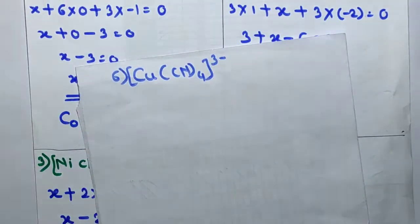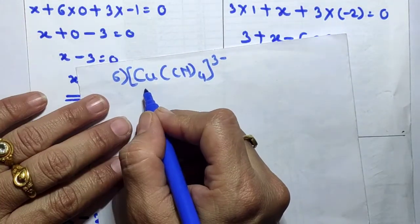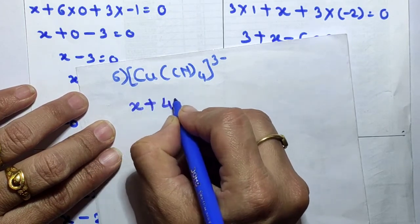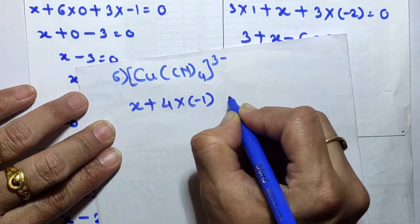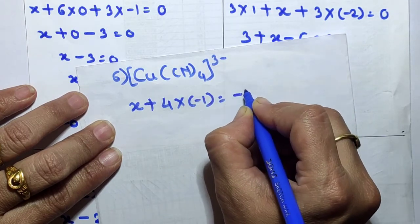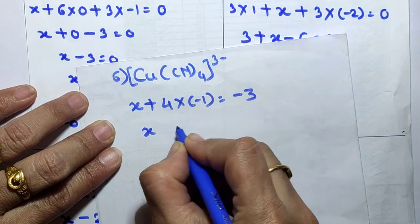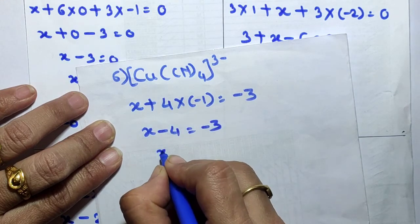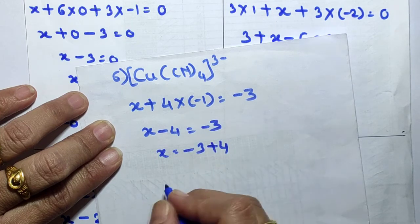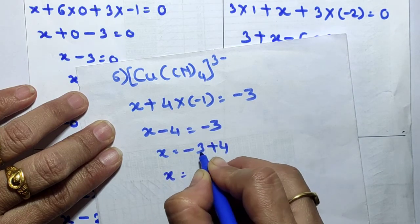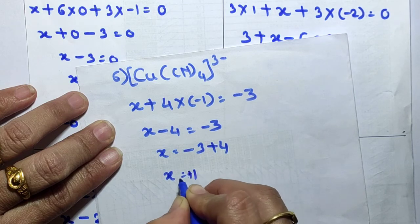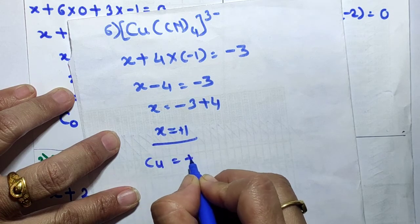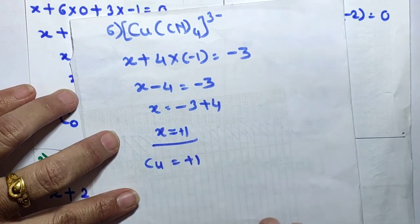Sixth example: [Cu(CN)4]³⁻. Central metal atom is Cu with oxidation state X. CN⁻ has charge −1. So: X + 4×(−1) = −3. That is X − 4 = −3, therefore X = −3 + 4 = +1. The oxidation number of Cu is +1 in this complex.